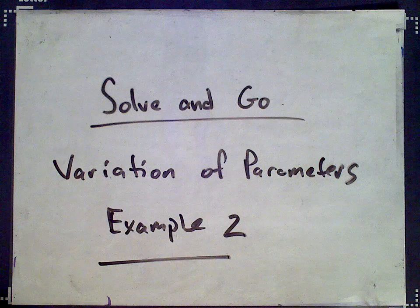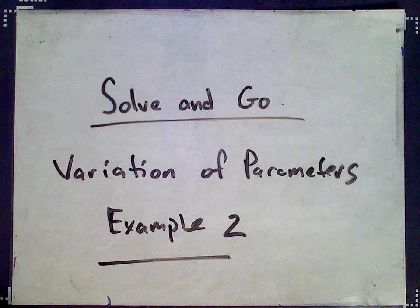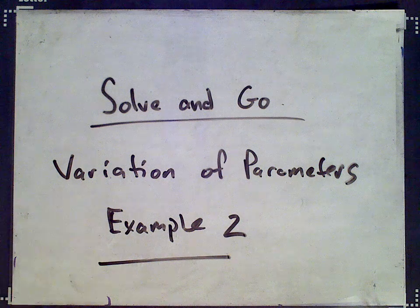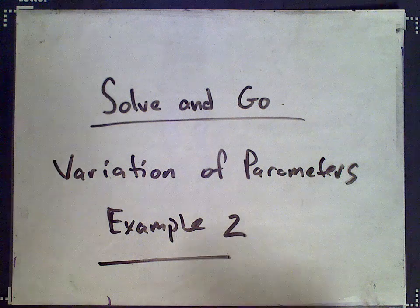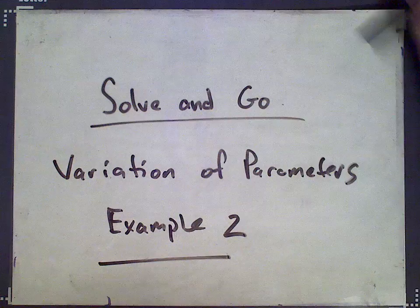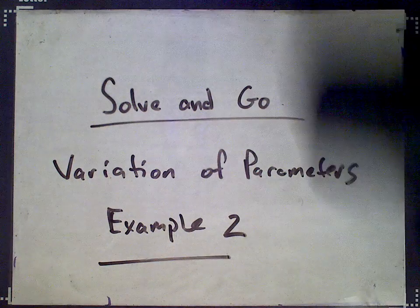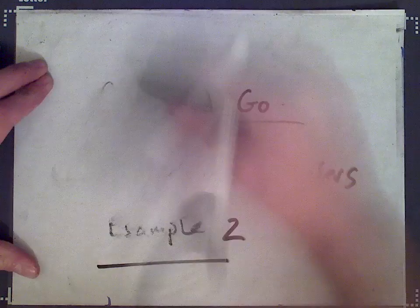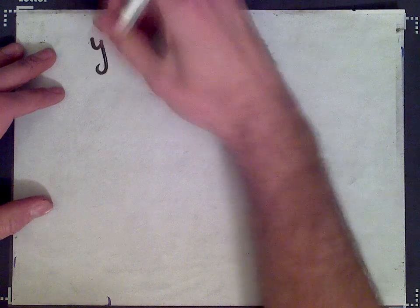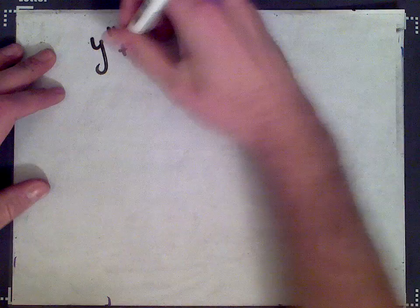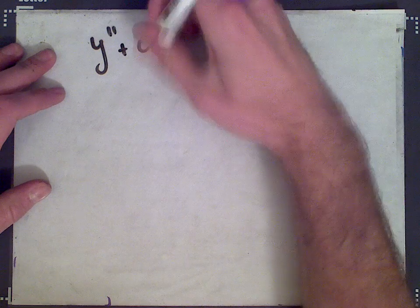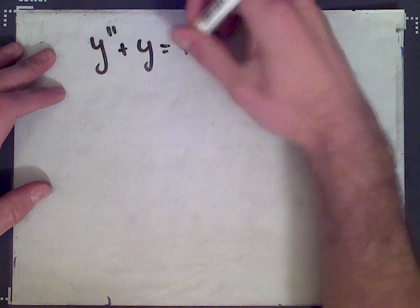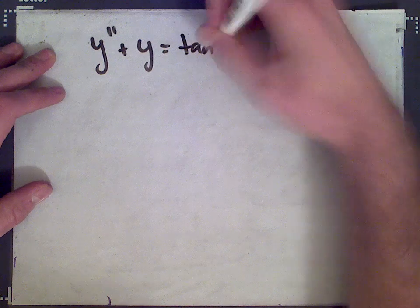Hi, welcome to SolveAndGo.com. This is the second example of a technique called variation of parameters for solving non-homogeneous differential equations. We're going to solve the following differential equation: y double prime plus y equals tan t.